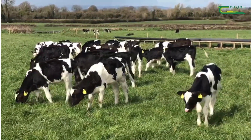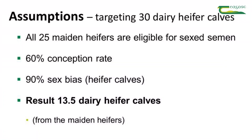That will also give us 1.5 male calves. If we assume that any animal that repeats is picked up with beef AI or a beef stock bull, and that at the end of the breeding season 95% of the heifers are in calf, we'll get 8.75 beef cross calves as well.